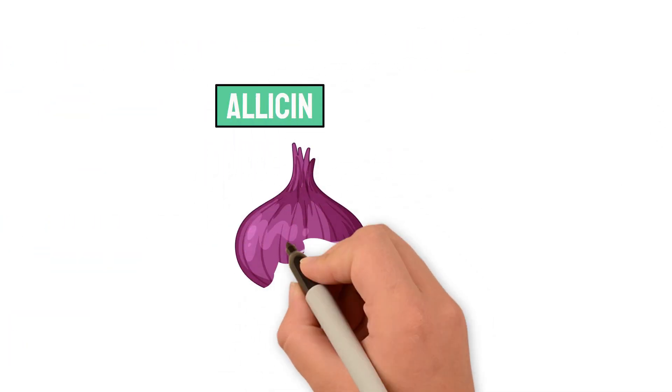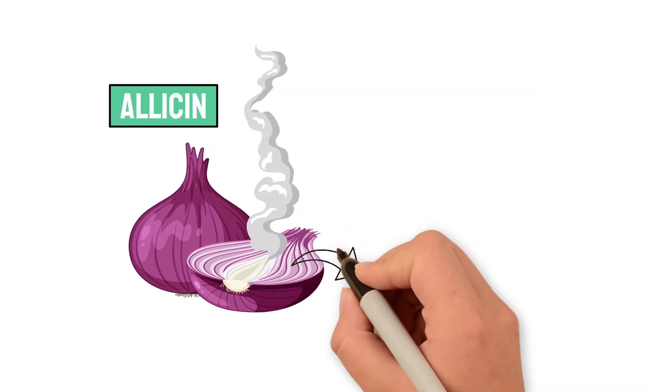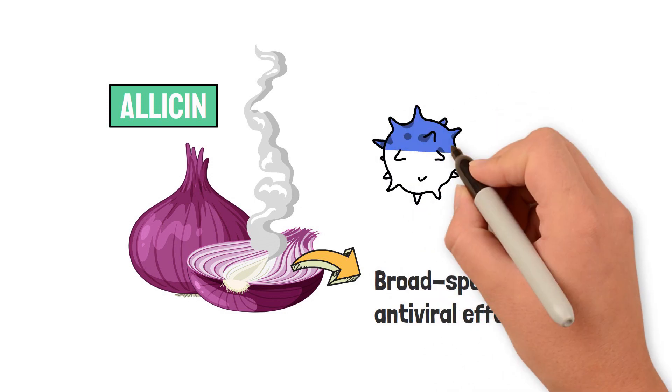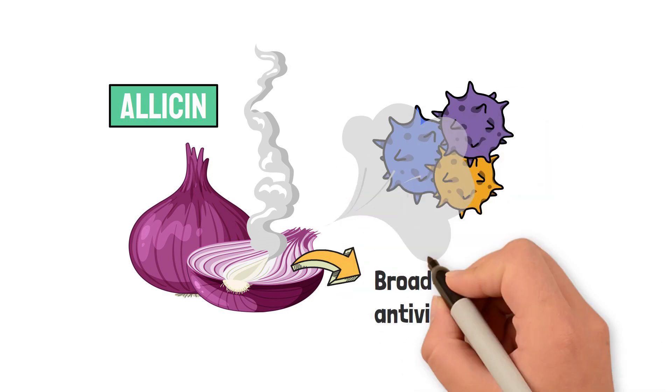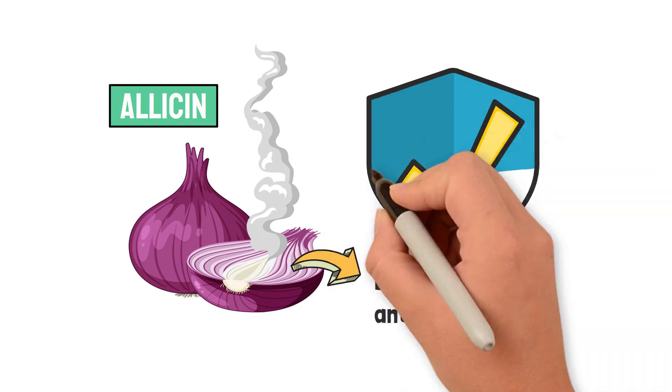Allicin is an example of a sulfur compound found in onions that is responsible for their pungent smell. Allicin exhibits broad-spectrum antiviral effects by interfering with viral protein synthesis and inhibiting viral attachment to host cells, inhibiting the growth and replication of these pathogens, helping to protect our bodies from infections.